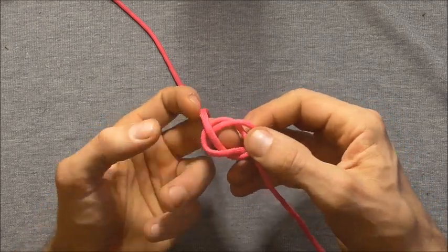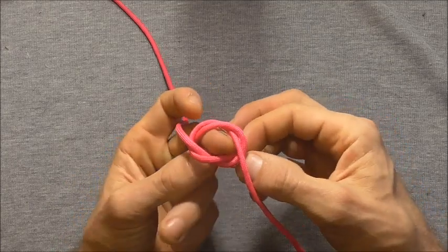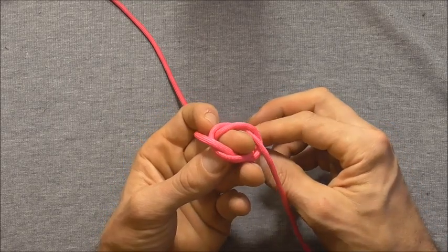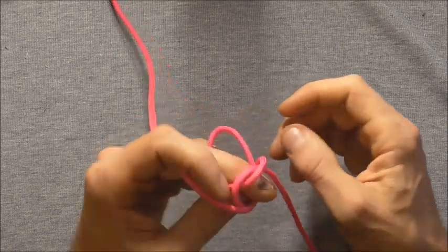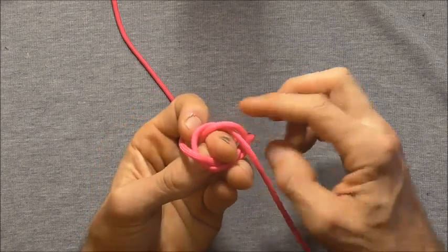First of all I want to insert my middle finger into the centre of the knot because we're going to need that centre later. And then just make sure that that loop is pulled through down the bottom so we don't lose that loop.